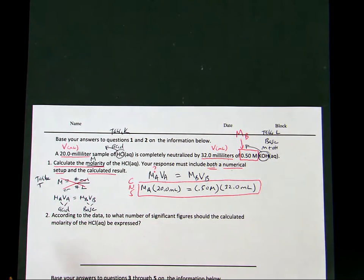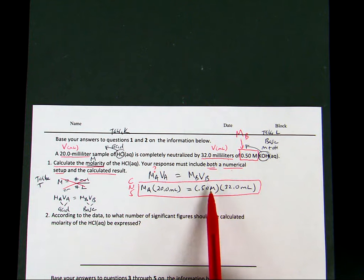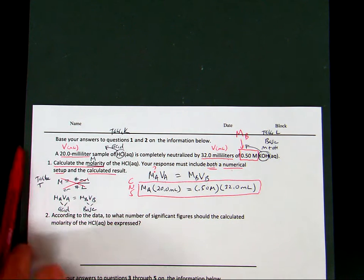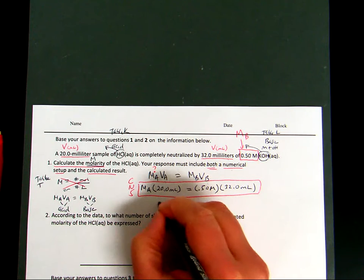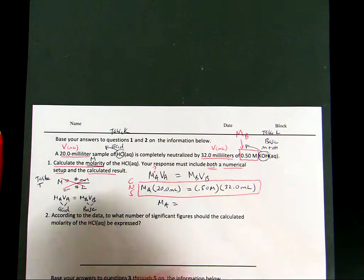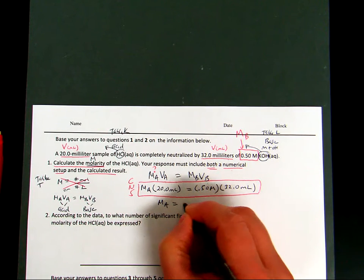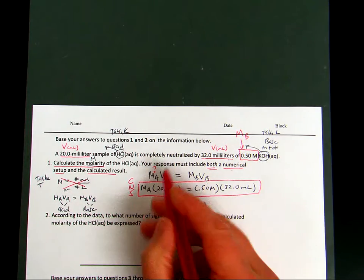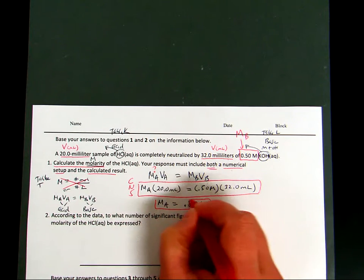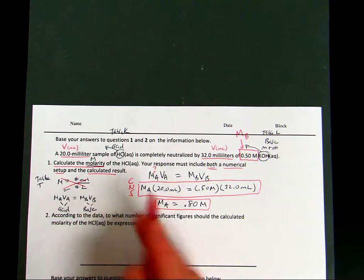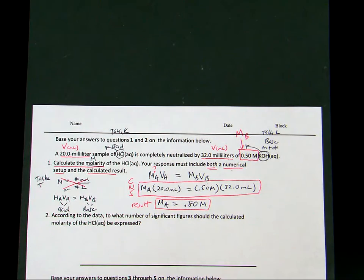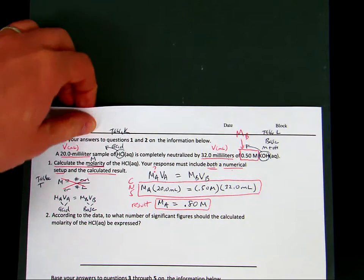Now I need a calculated result. So I'm going to multiply the 0.5 times the 32, and then I'm going to divide that product by the value of 20. So the MA, when I look at my calculator, it will show me 0.80 capital M. So this represents my final calculated result. So that is the result of the correct numerical setup.